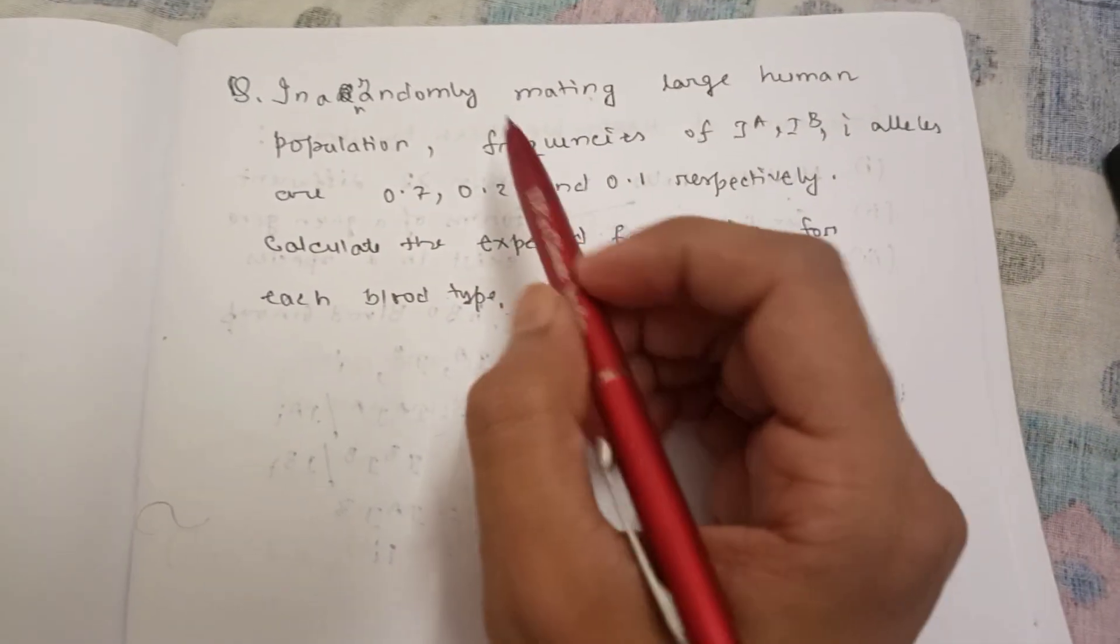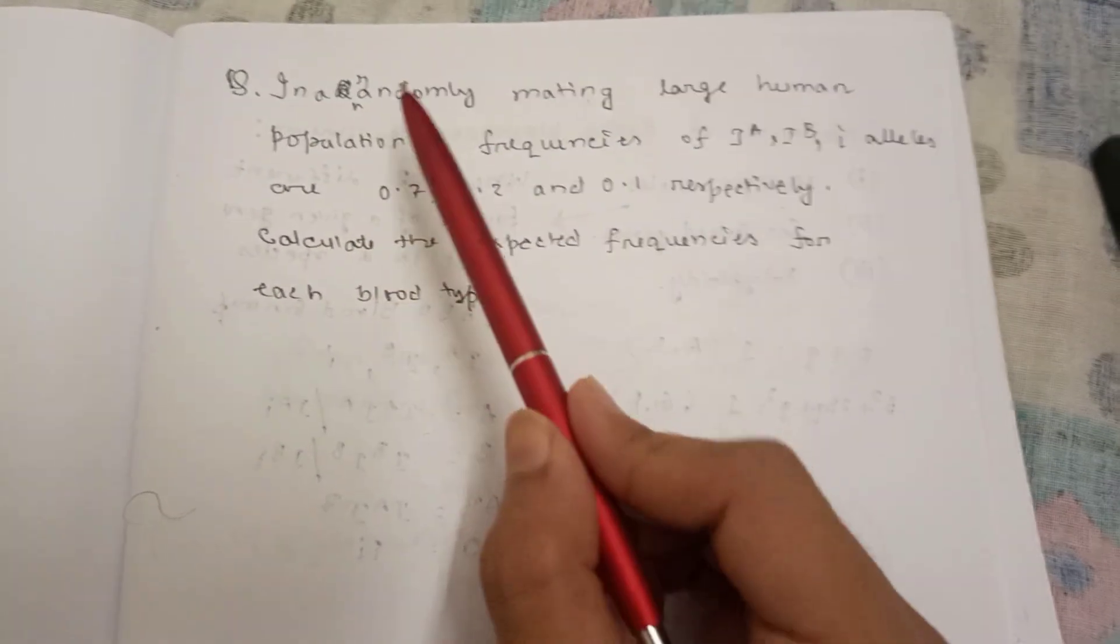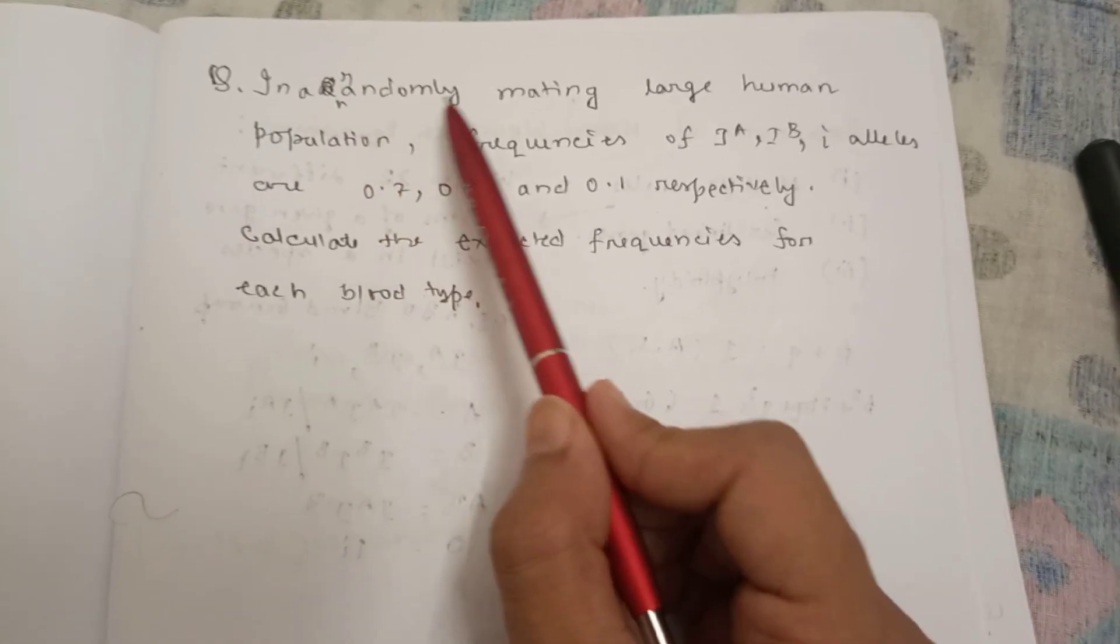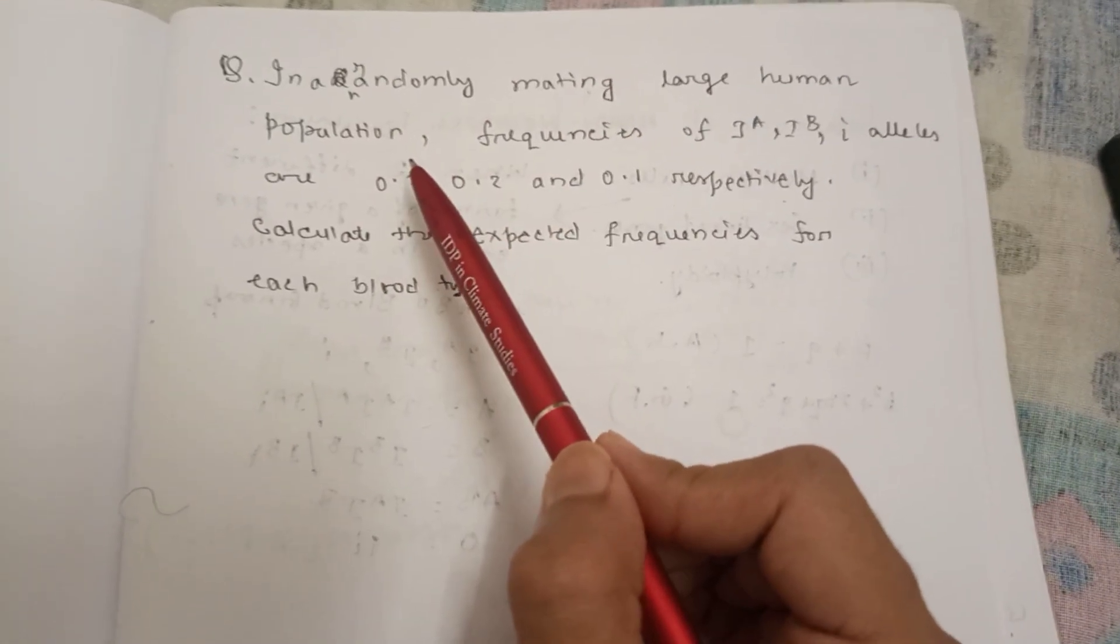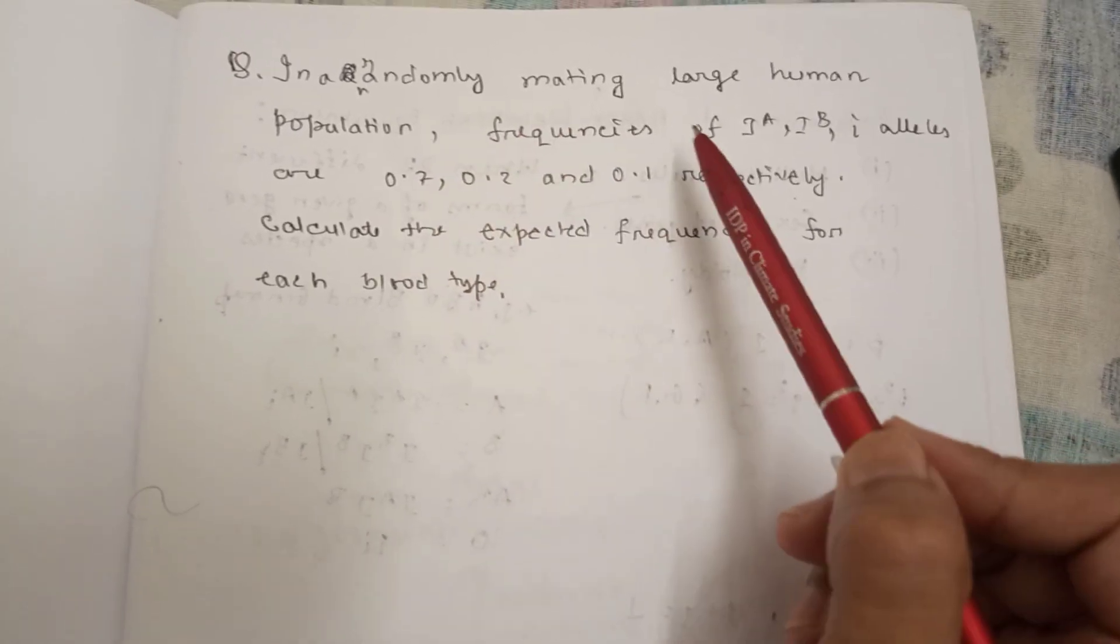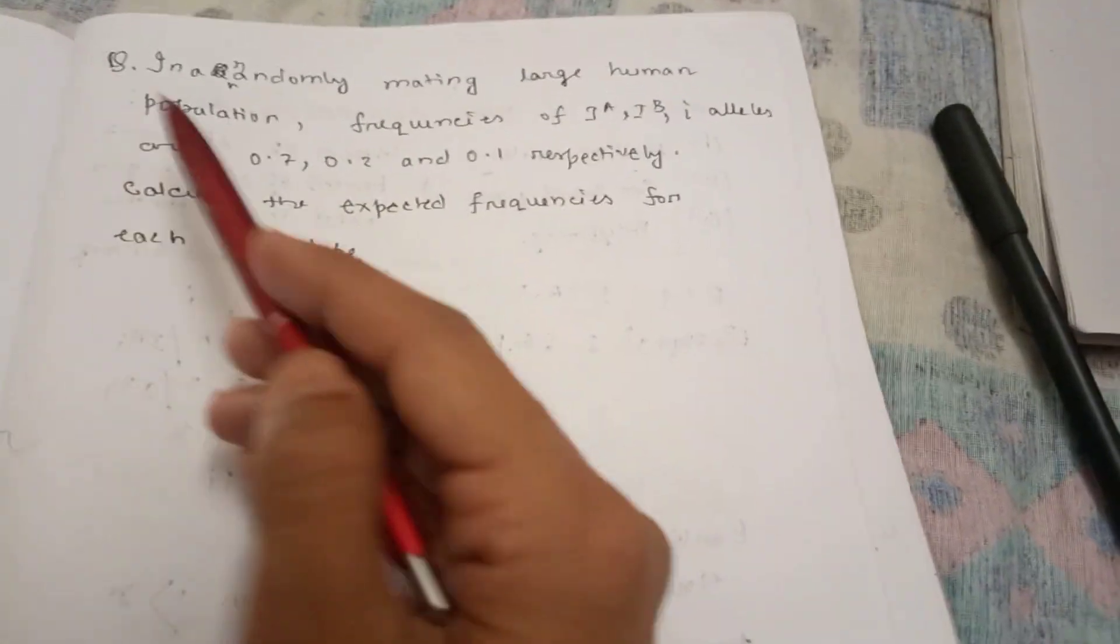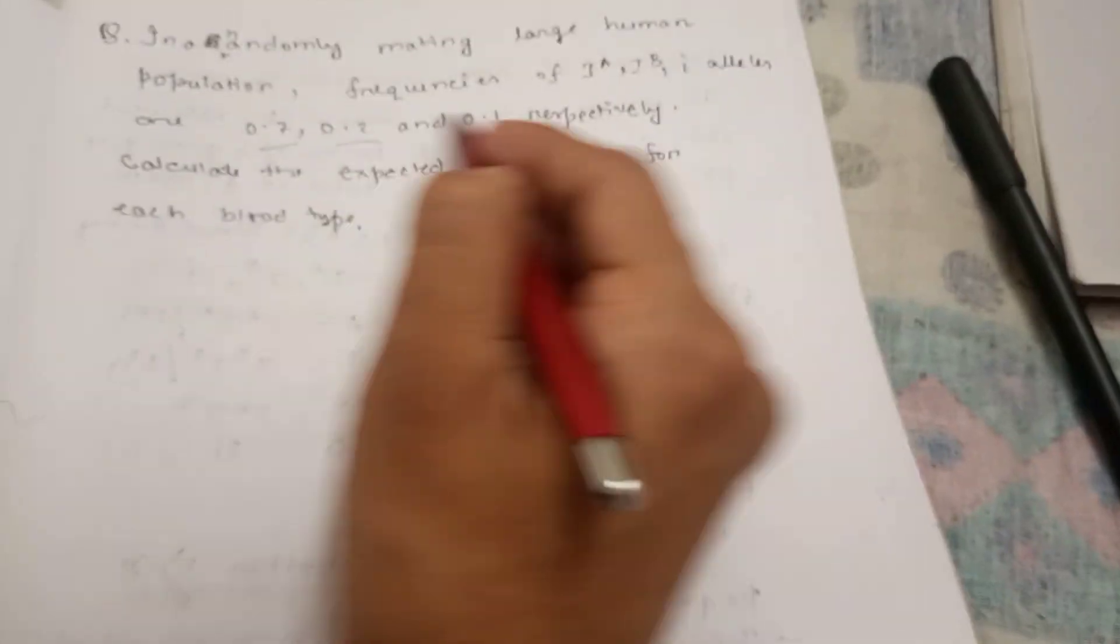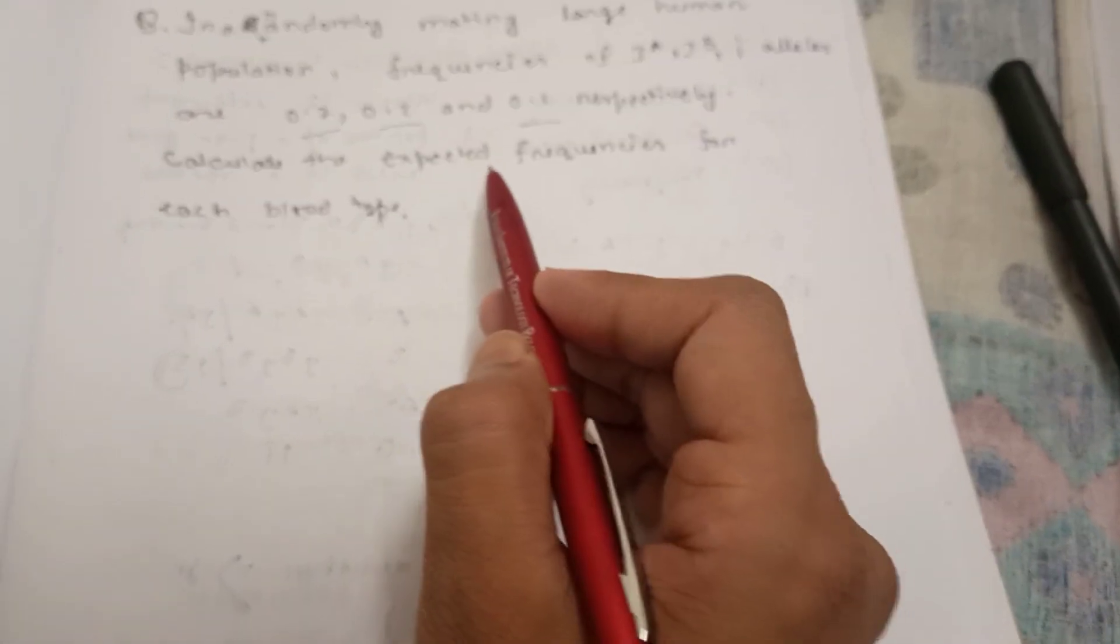In this problem we can see the question is: in a randomly mating large human population, that means we can assume it's in Hardy-Weinberg equilibrium. Frequencies of I^A, I^B, i alleles are 0.7, 0.2, 0.1.